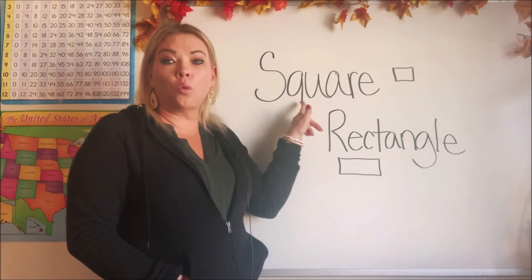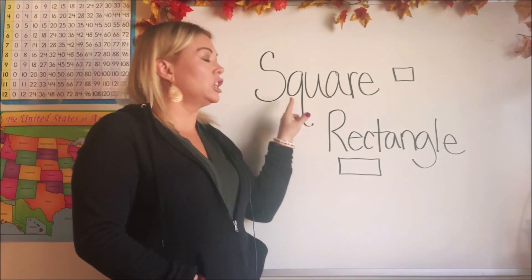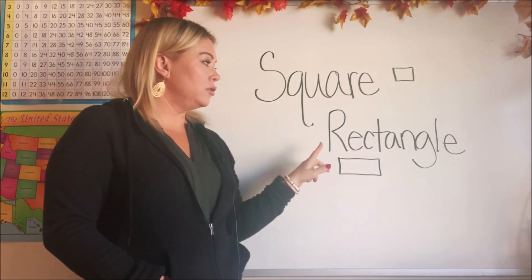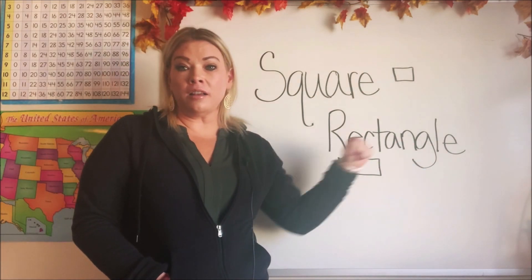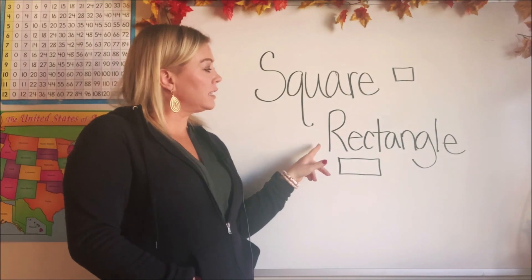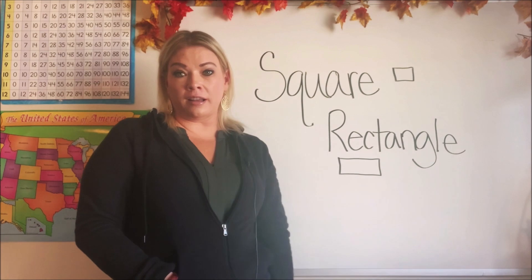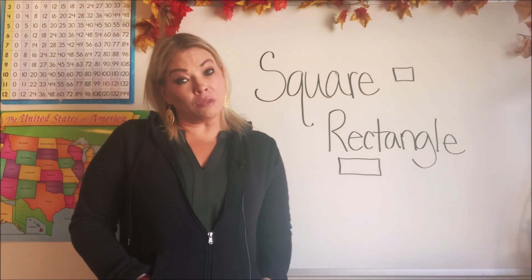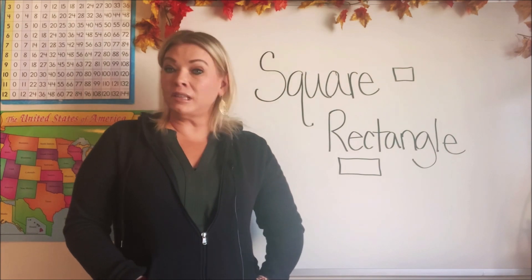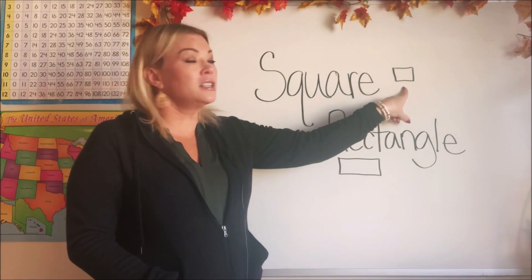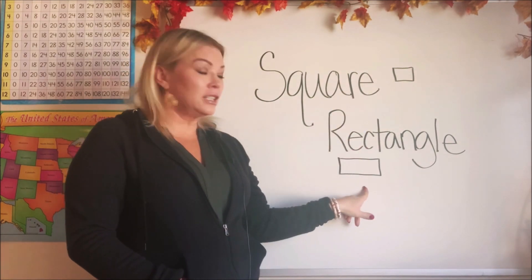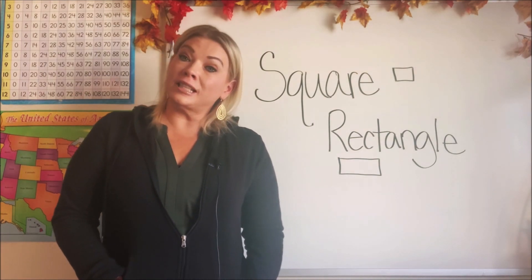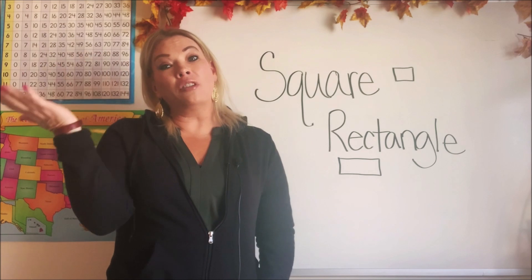Can you say square? It has a Q in it. Square. Can you say rectangle? It's kind of a long one, isn't it? Rectangle. And a square and a rectangle are really similar to each other, but they're not the same thing. This is a square and this is a rectangle. So let's learn today how they're the same, but also how they're different.